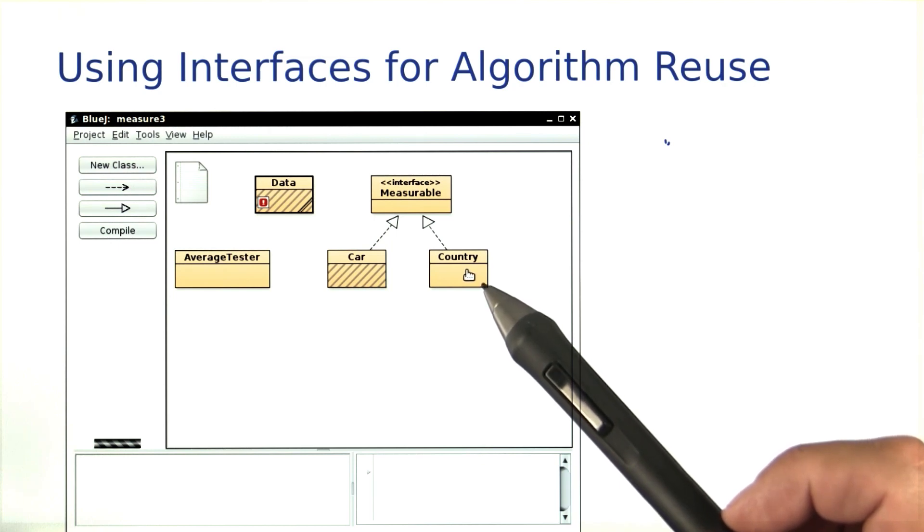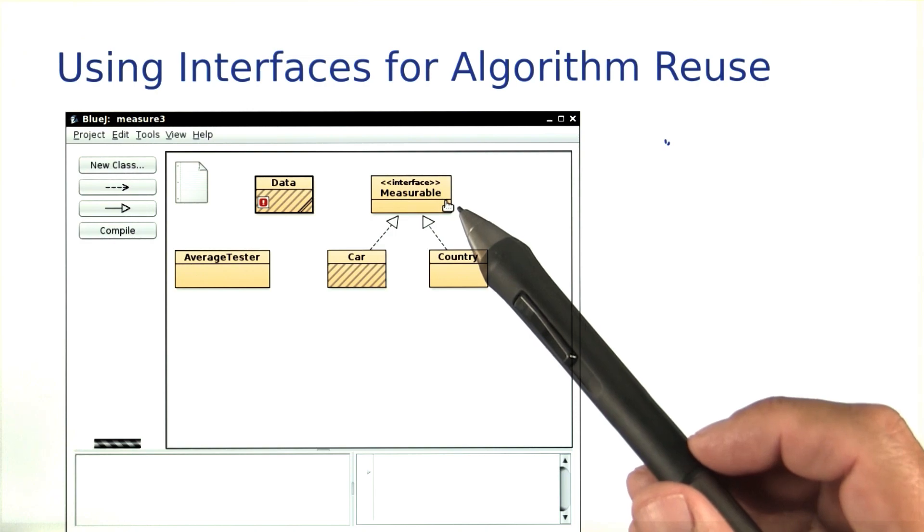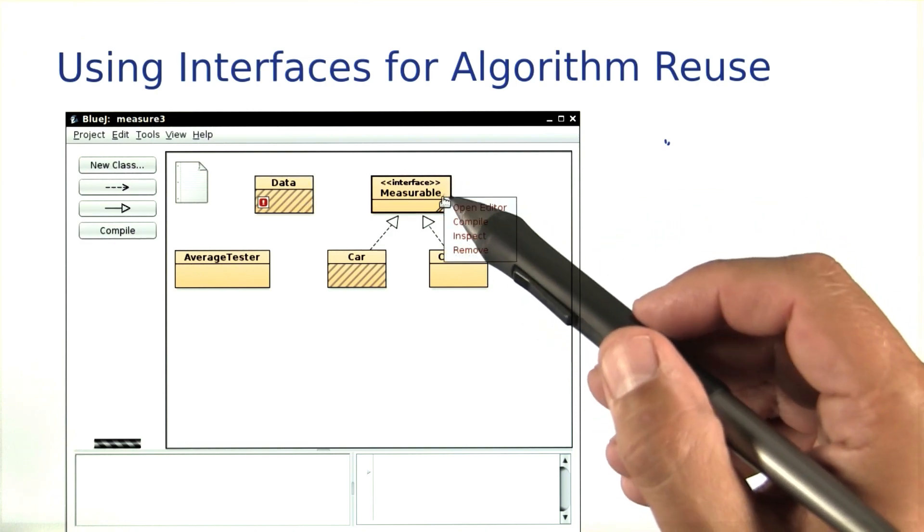But let's say they've both agreed on what it meant for them to be measured. Let's say they both implemented a common interface. I call this interface measurable.